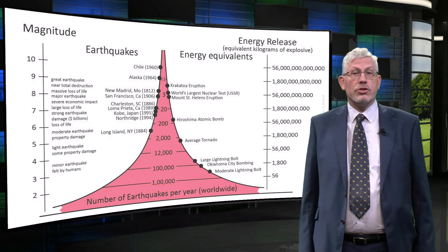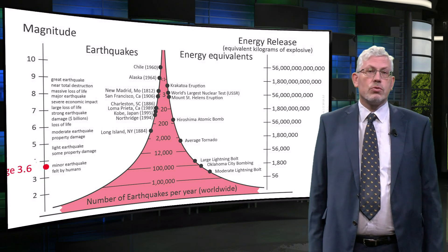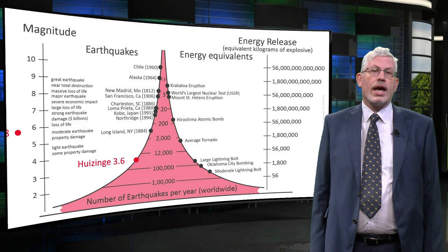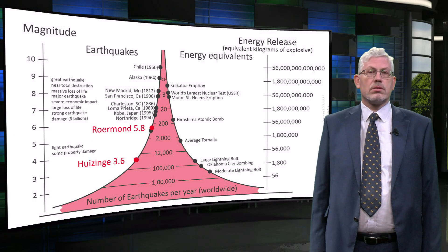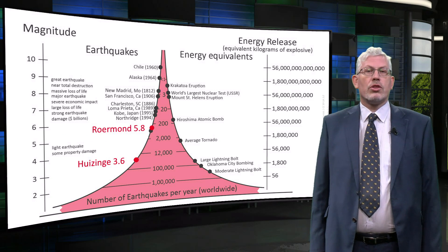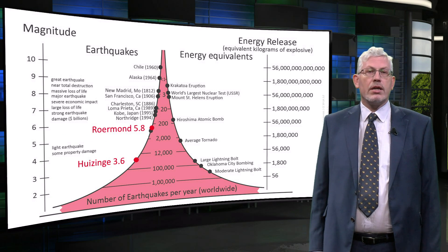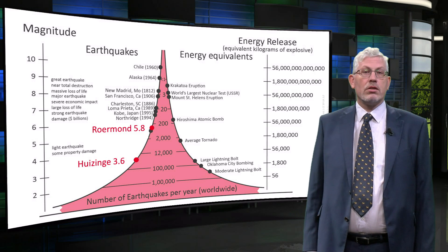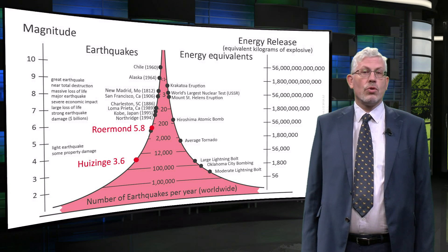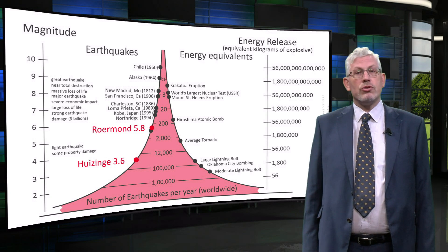For instance, the Herzinger earthquake in 2012 had a magnitude of 3.6. This is about 900 times less energy than the Roermond earthquake in 1992, which had a magnitude of 5.8.